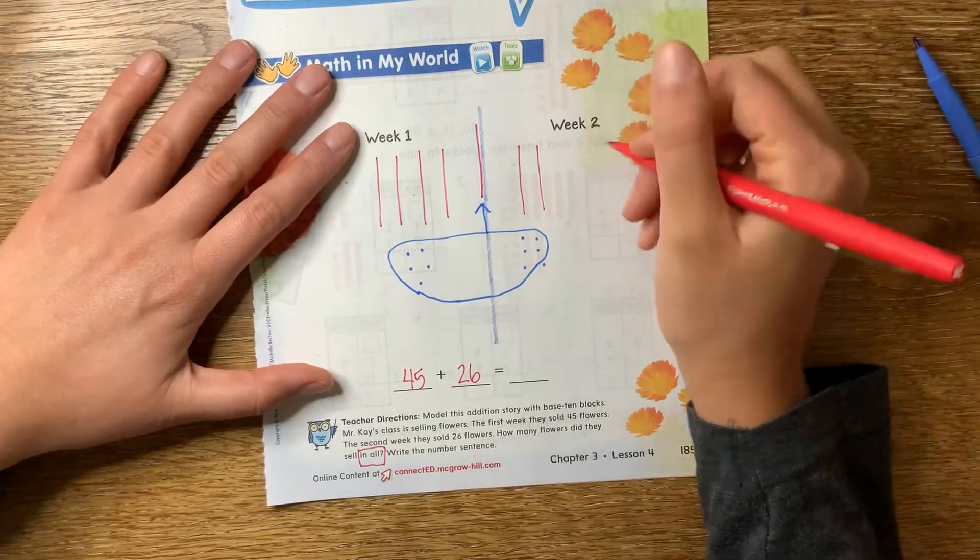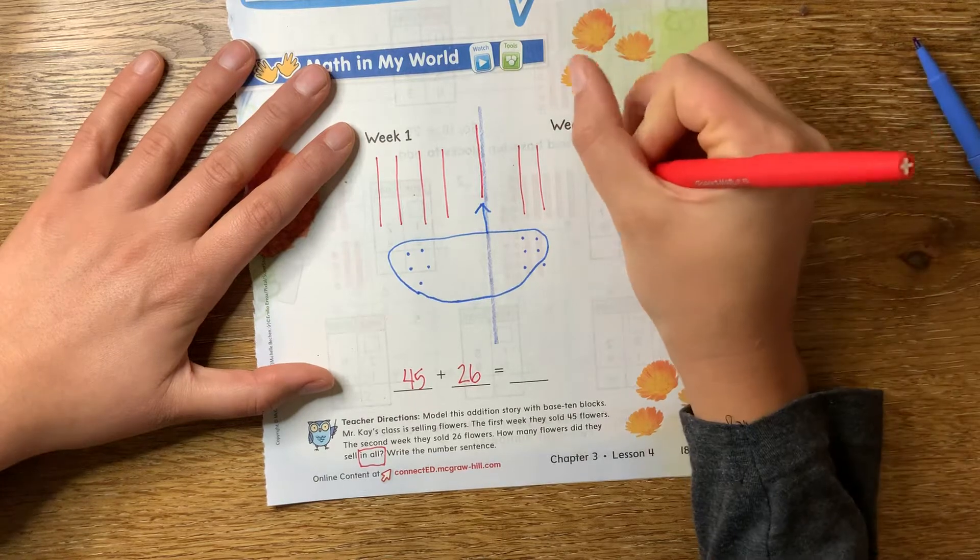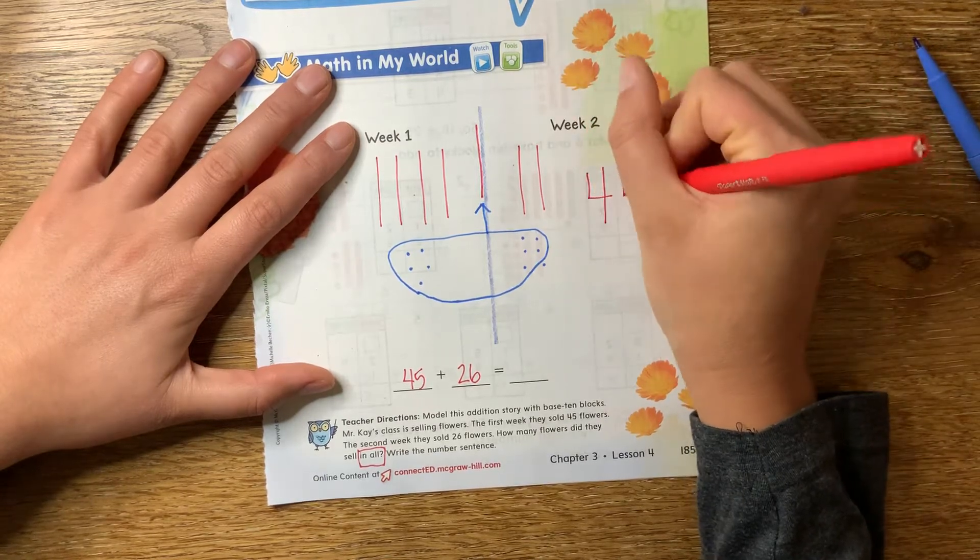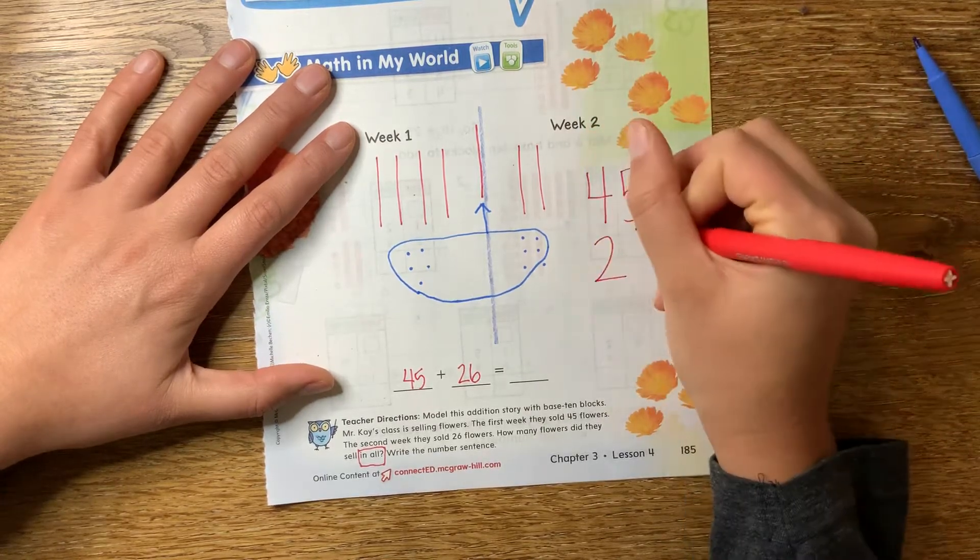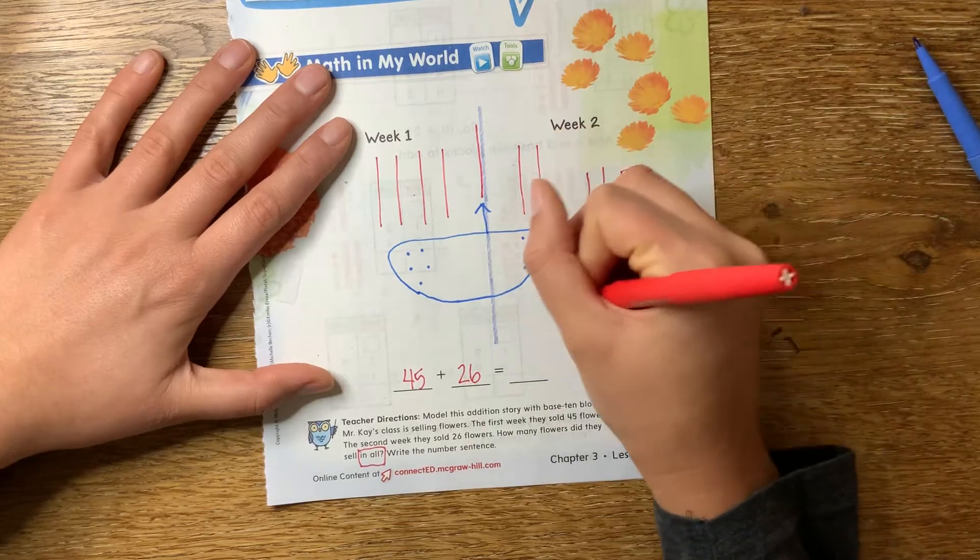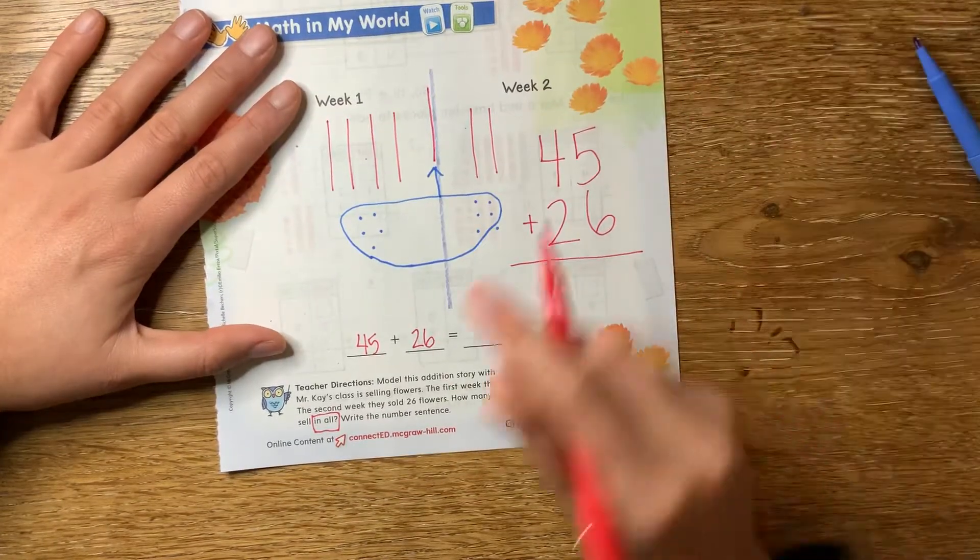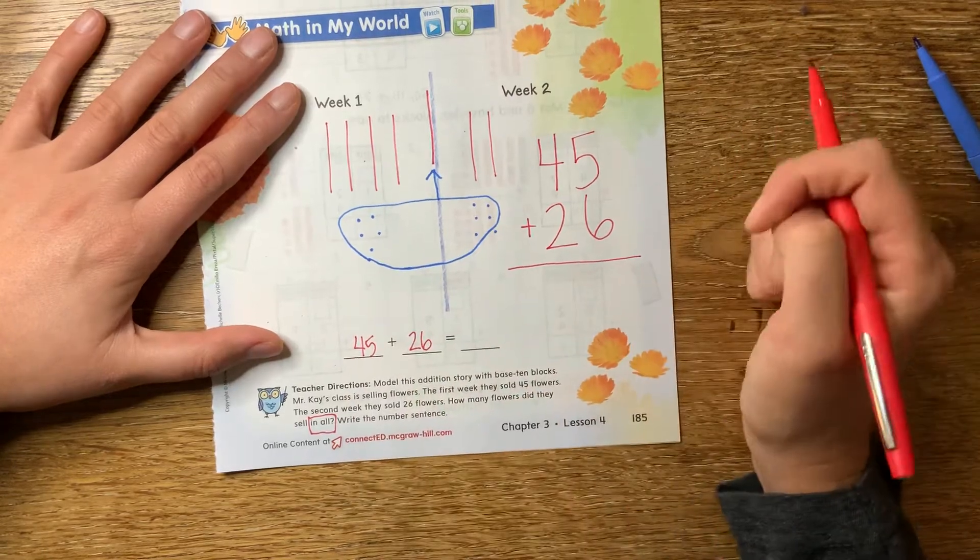So let's do this with our lineup method, okay? 45, make sure your tens and ones are lined up, plus 26. 5 plus 6, we already decided what was 5 plus 6? 11.